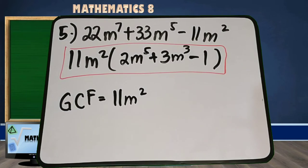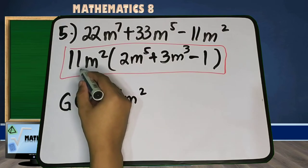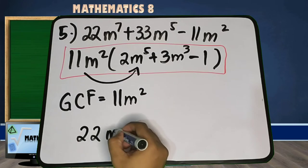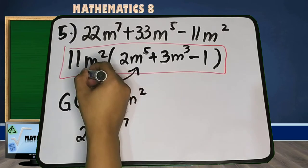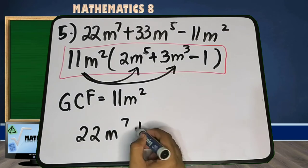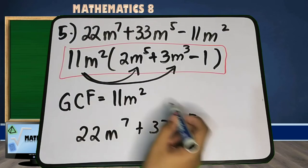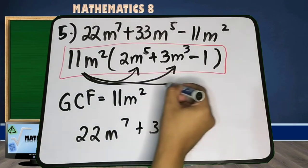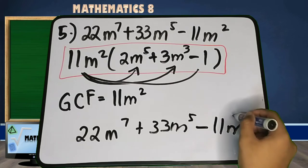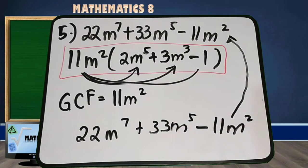If you want to check if your answer is correct, just multiply using the distributive property. Let's check: 11m squared times 2m raised to 5 is 22m raised to 7. 11m squared times 3m cubed is positive 33m raised to 5. 11m squared times negative 1 is minus 11m squared. Notice they are the same, so it means your answer is correct.